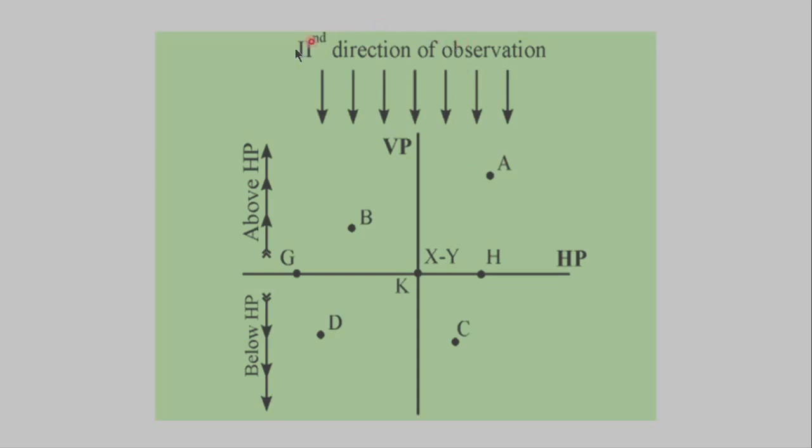Similarly, this is direction two. Now referring to HP, we can say that this part of the space is above HP while this part is below HP. Point A and point B are above HP while point C and point D are below HP. Point H and point G are on HP.